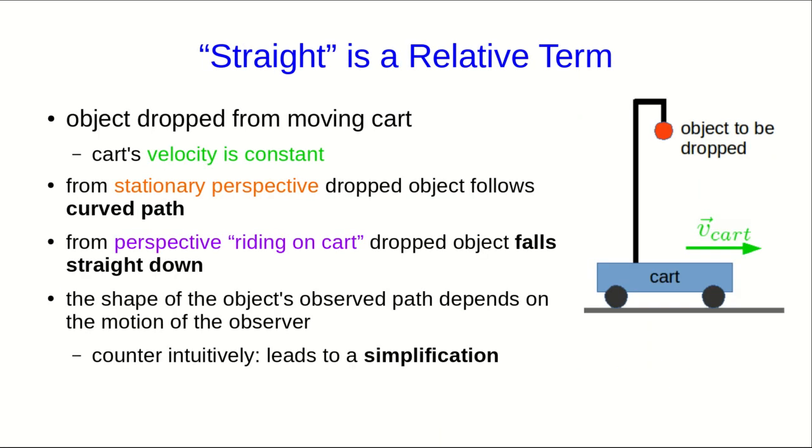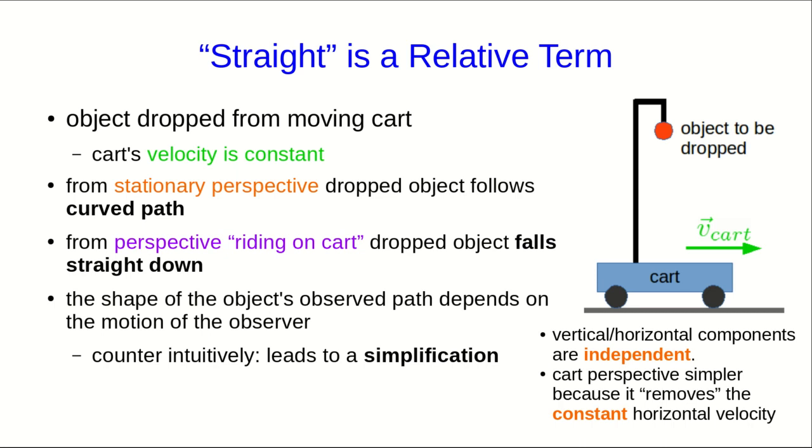Now we can understand something that I hinted at way back near the beginning of this lecture, which is that the perspective riding on the cart is simpler, and now we can see why. We can think of this motion as two one-dimensional motions superimposed on top of each other, a vertical motion with uniform acceleration and a horizontal motion with uniform velocity. And by taking the perspective riding on the cart, we simply remove the piece that's horizontal.